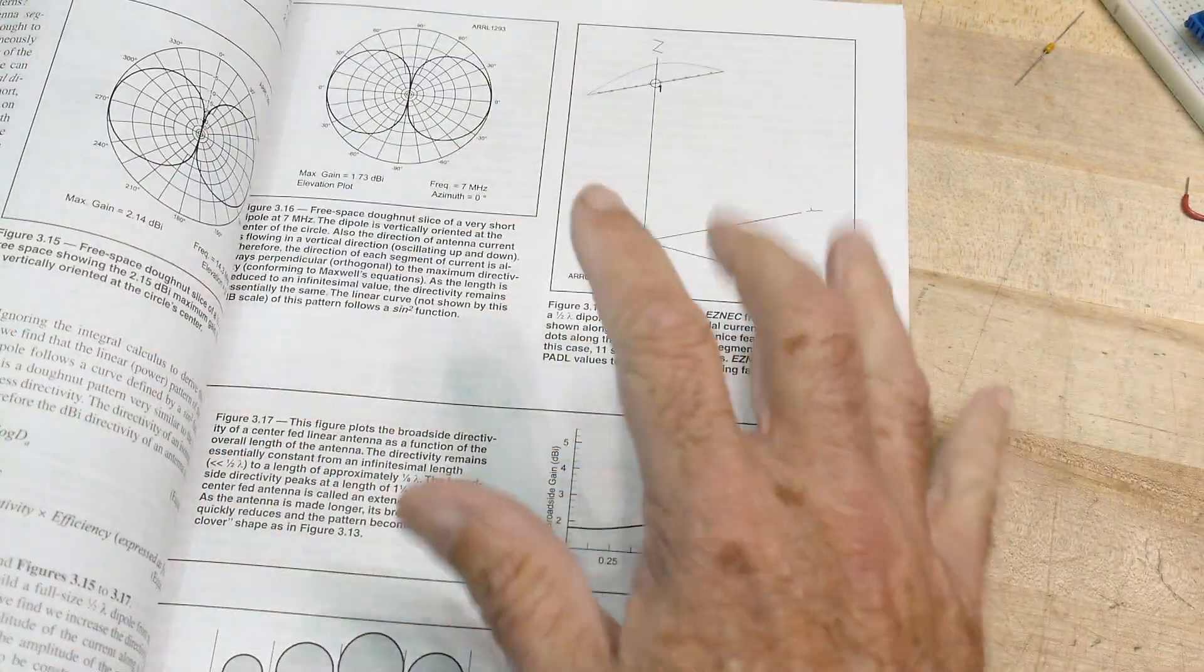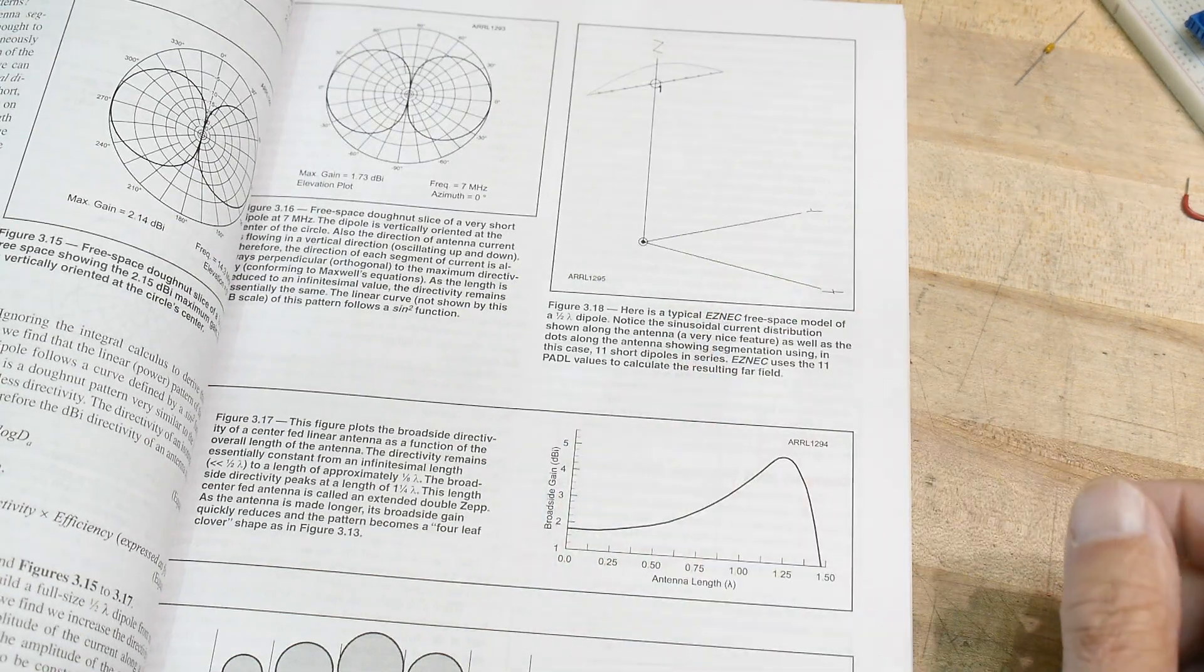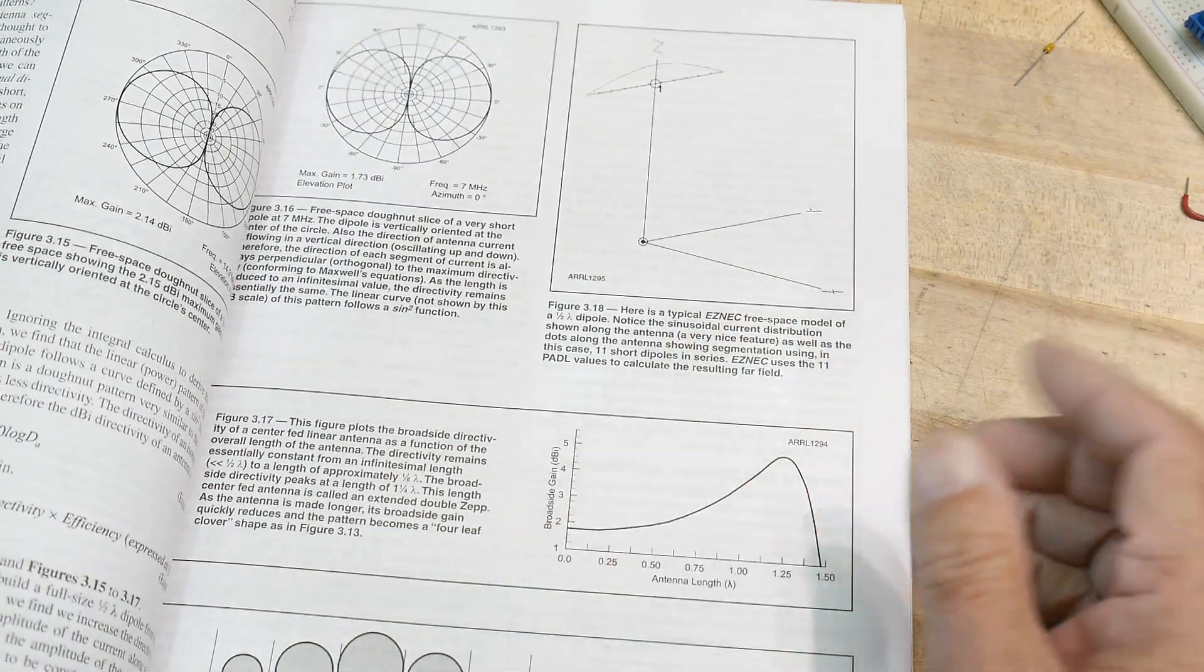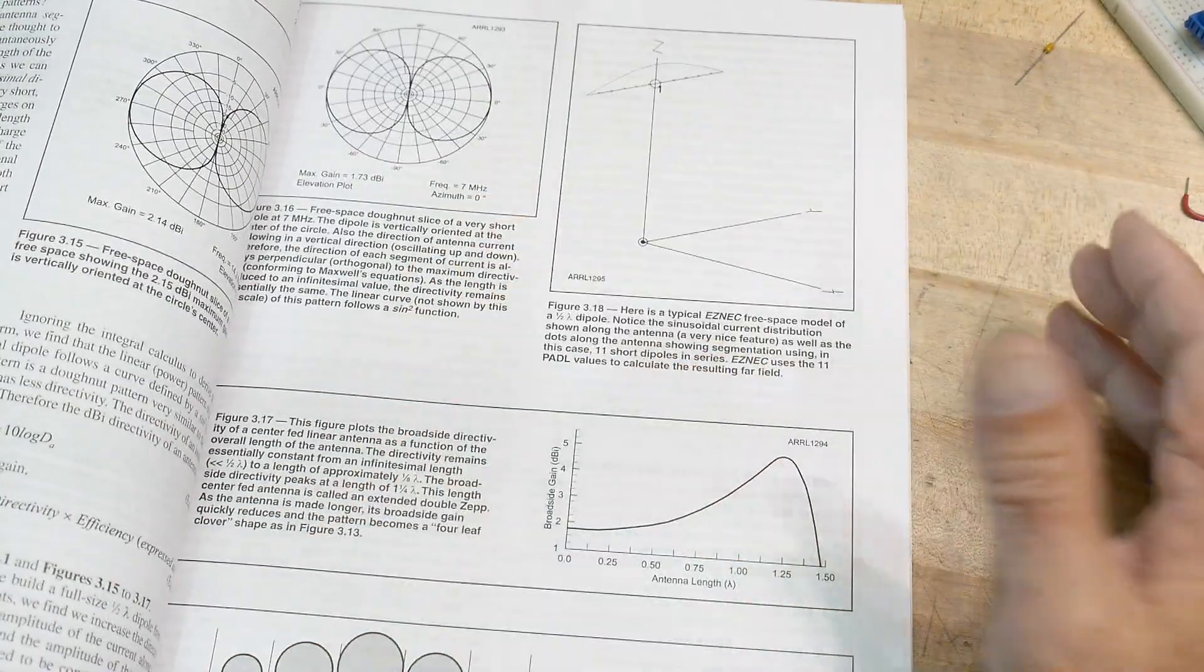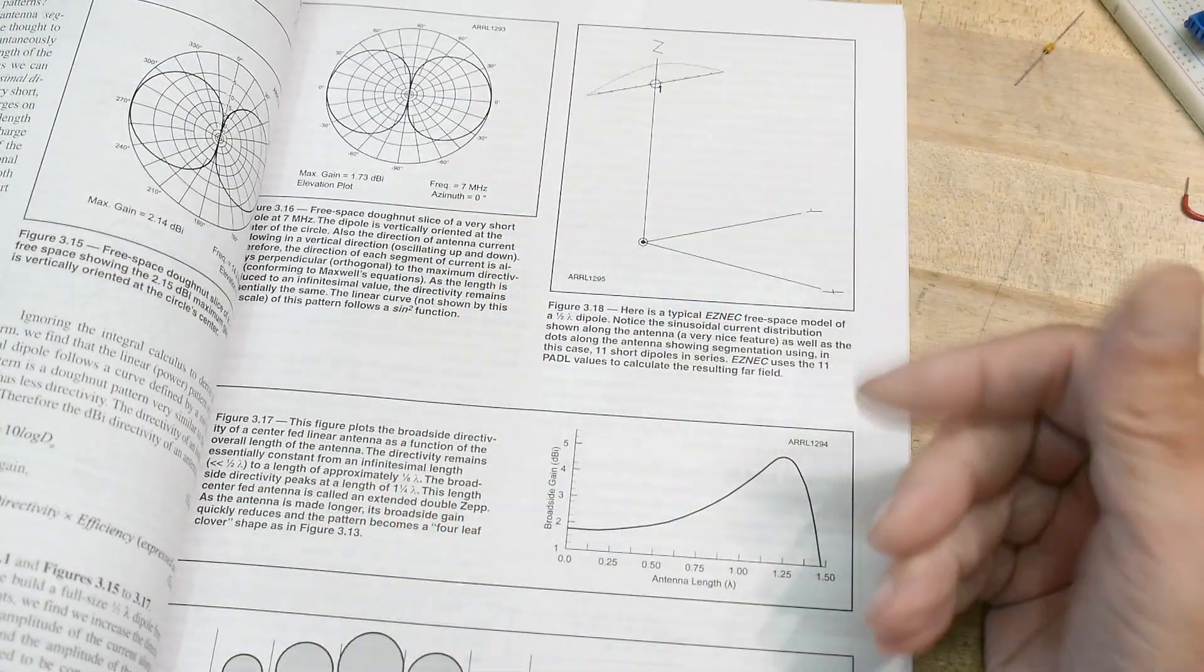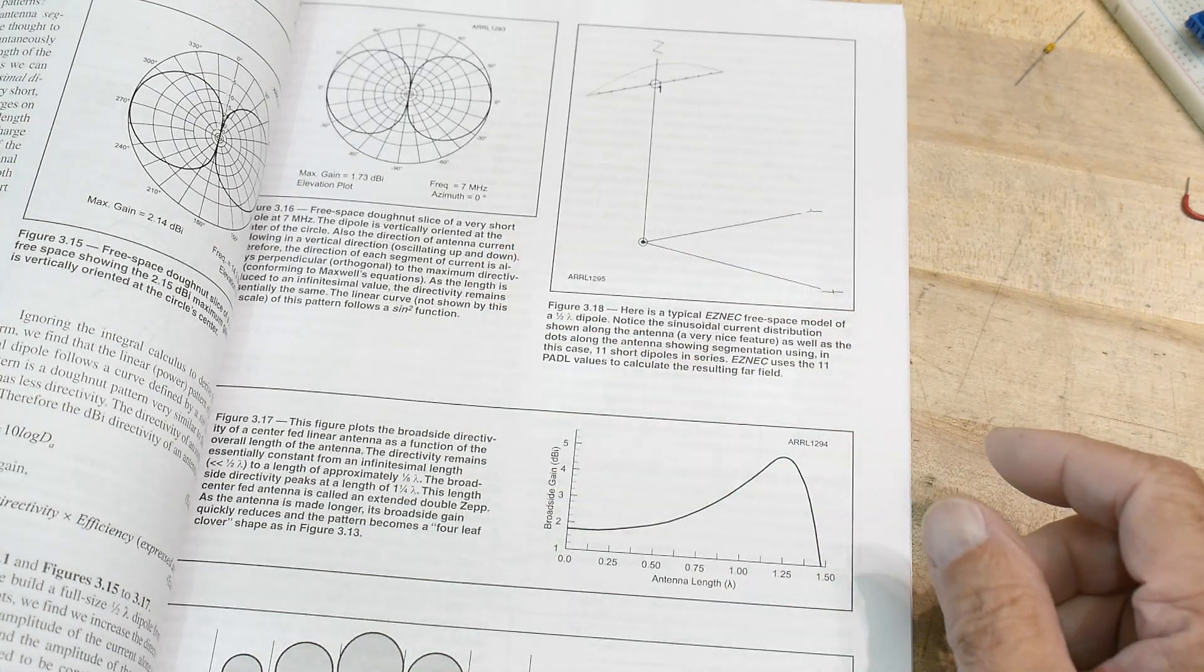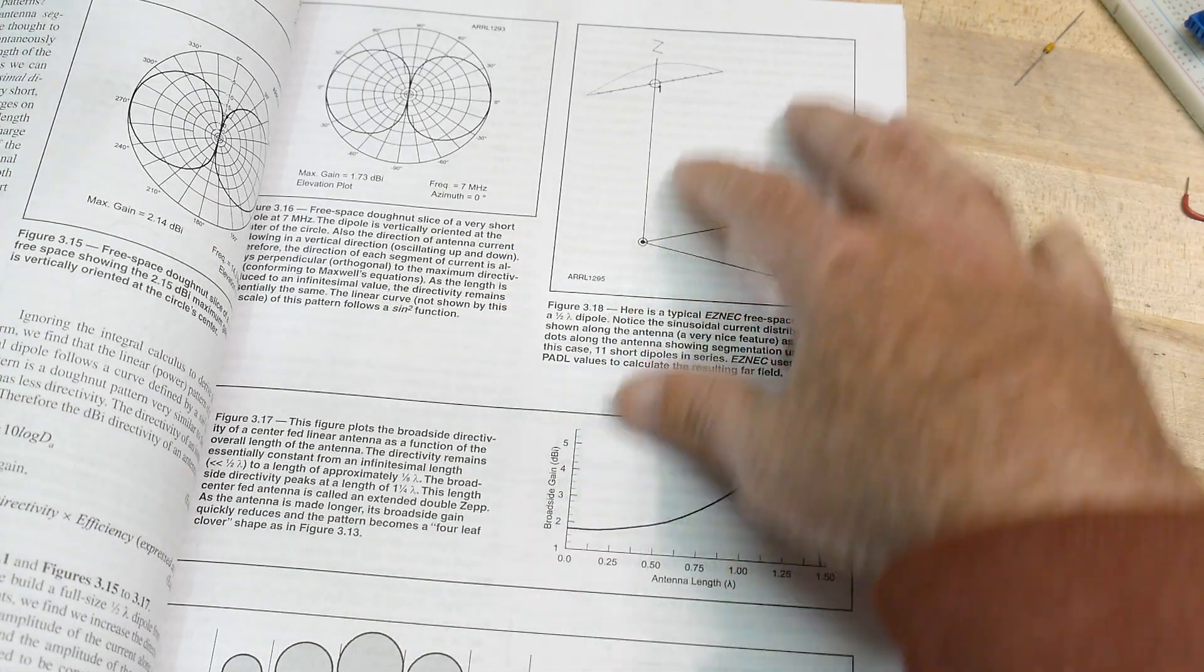I thought I would do a separate video on running this. Now I'm not an expert. I know enough to be a little bit dangerous. We'll run this for a couple antennas. We'll run it for a dipole in free space, a dipole over the earth and a vertical antenna. We'll do those and see what happens with those.